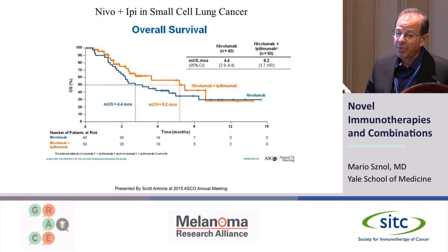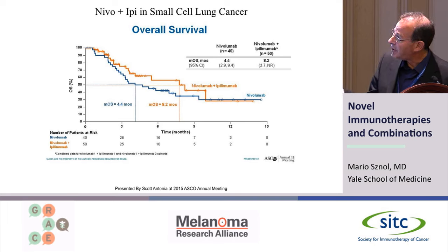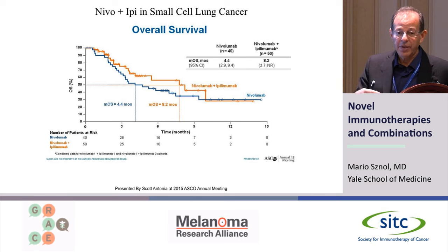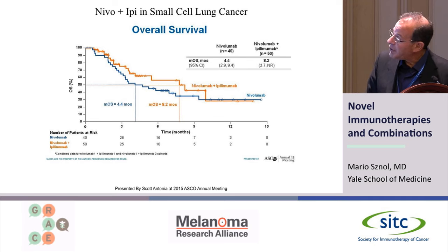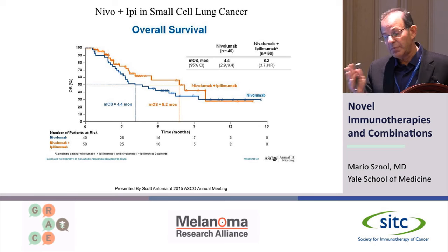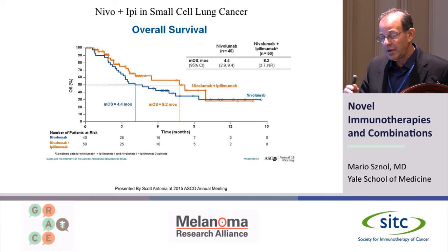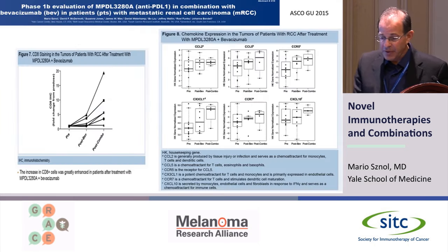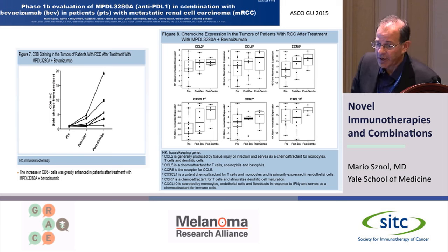In small cell lung cancer, preliminary data with a small number of patients also suggests the combination looks better than anti-PD-1 alone for overall survival. So now in at least three different tumors, we believe the combination is looking better than single agents. This was sort of low-hanging fruit — the first rational combination. But knowing what combinations to use and how to move forward from here will be very, very difficult.